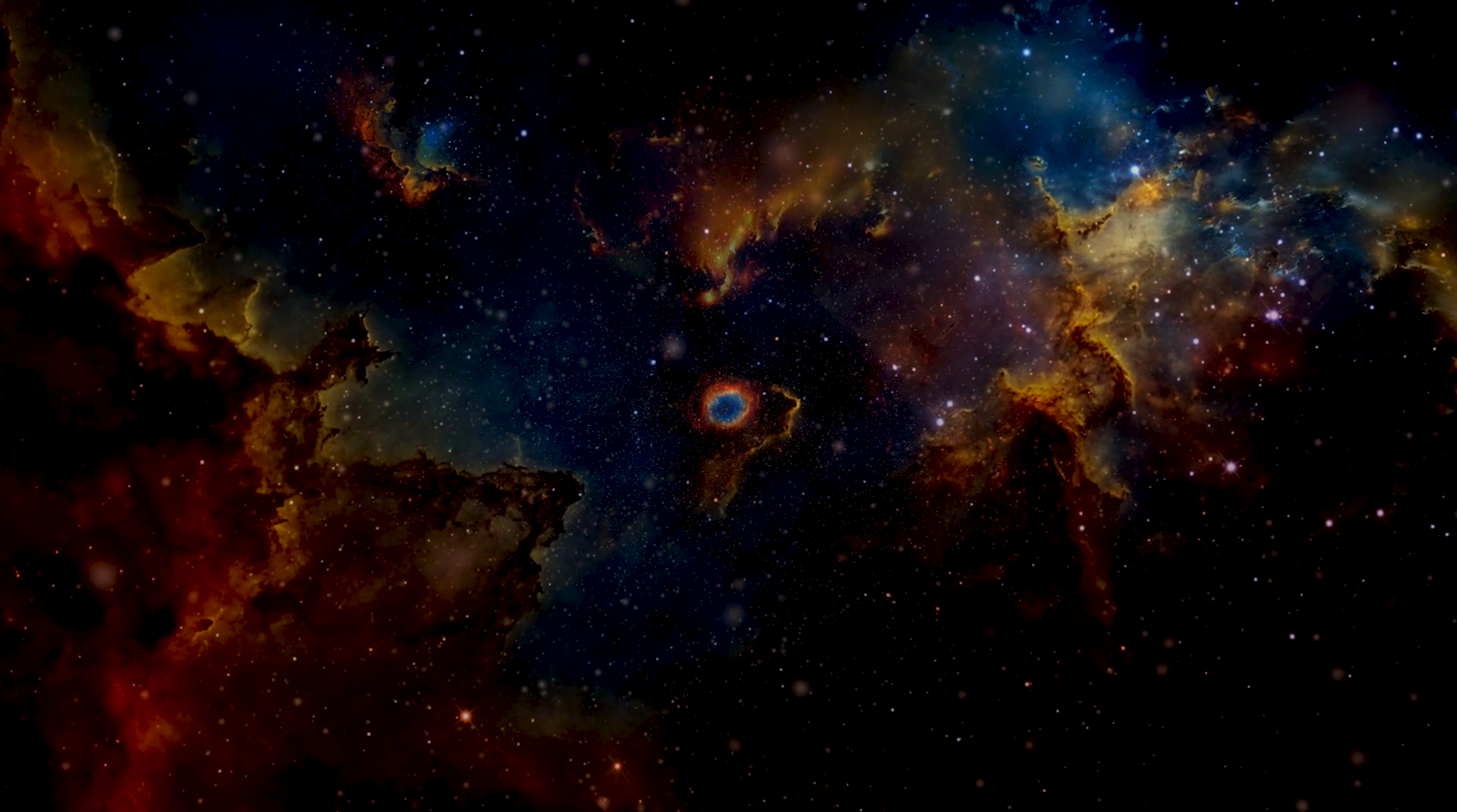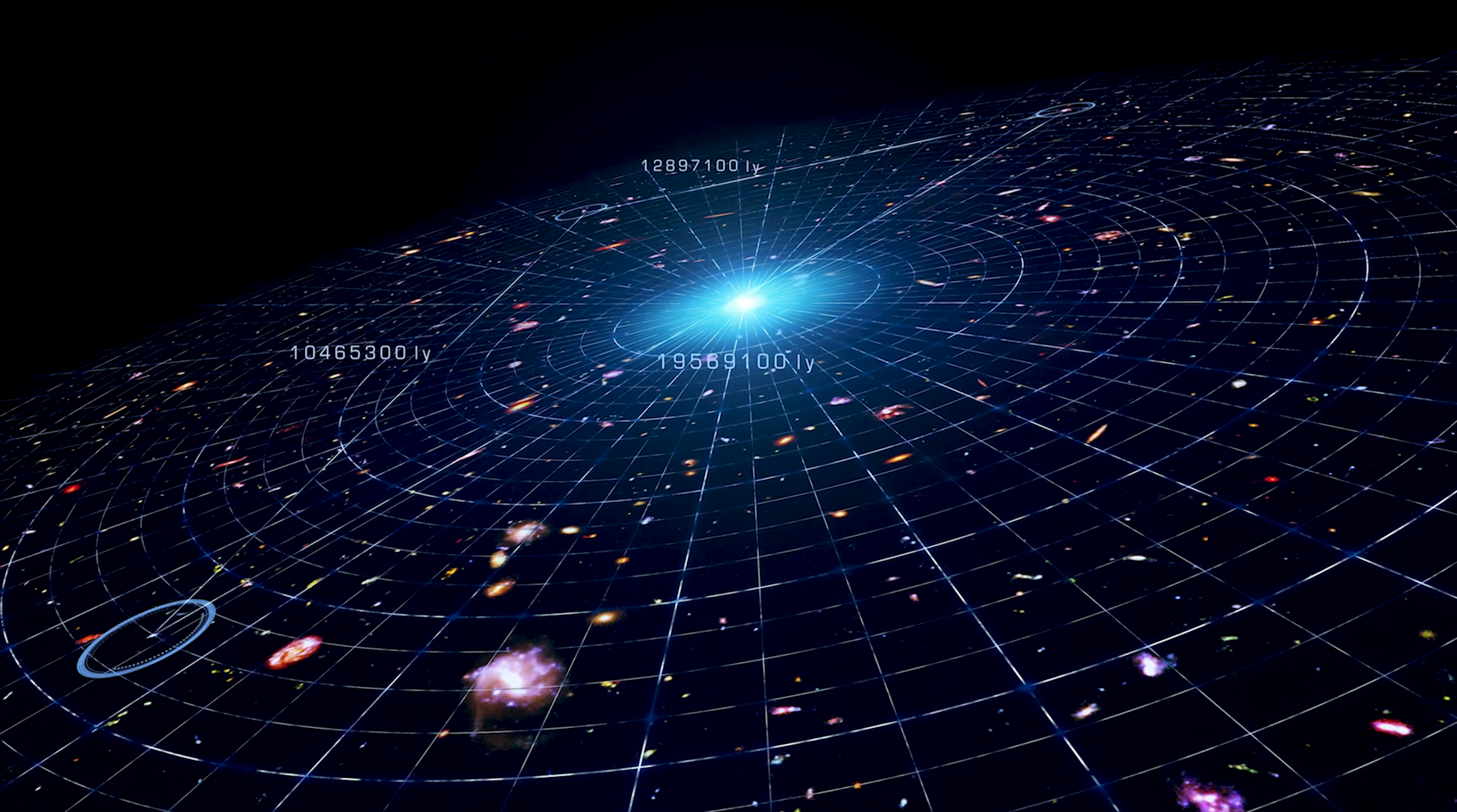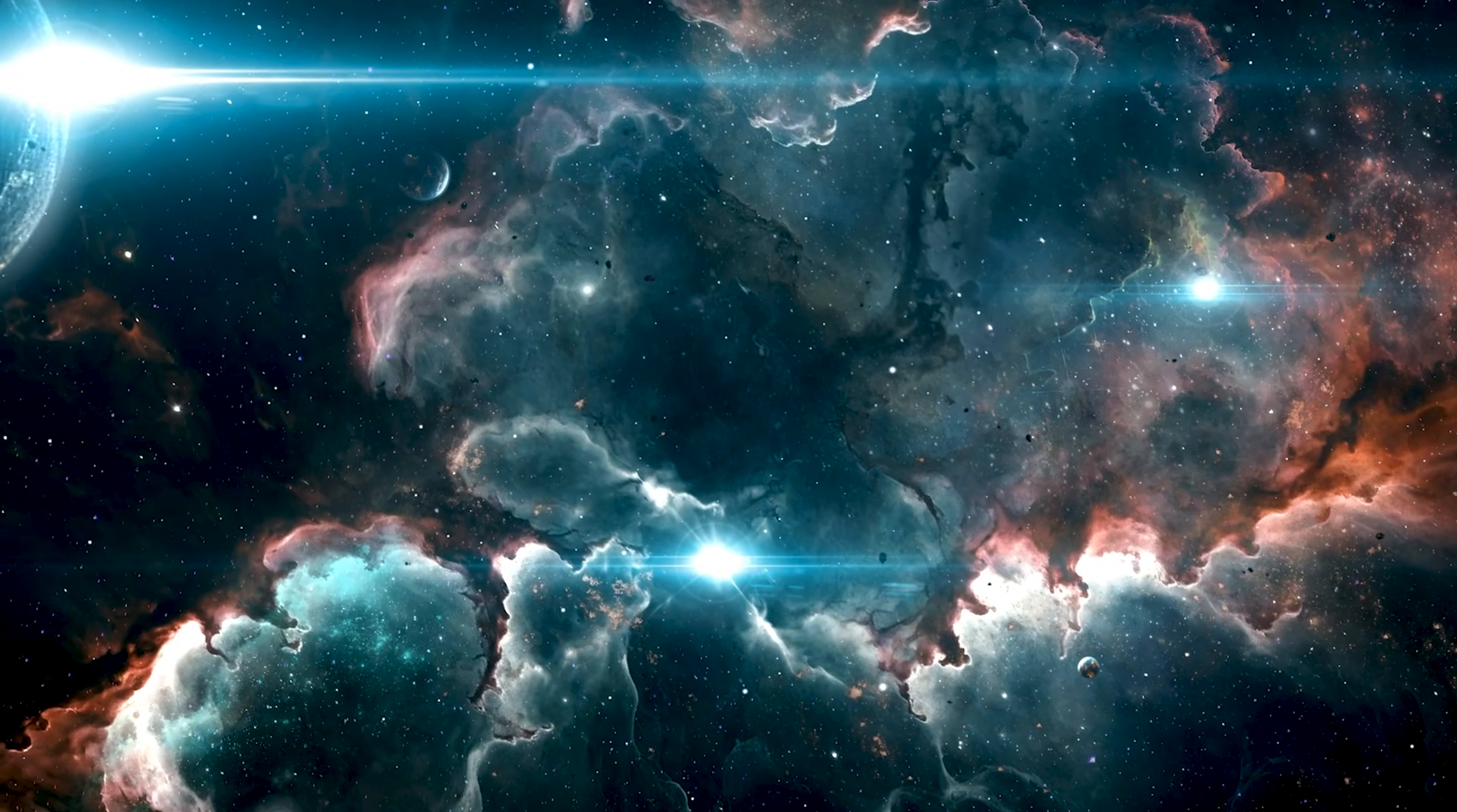To understand why this is such a problem, we need to talk about the model itself. Lambda CDM says the universe is dominated by two invisible ingredients: cold dark matter and dark energy. Together, they control how galaxies form and how the universe expands. According to this model, early galaxies grow slowly. They pull in matter over time, forming stars gradually. There simply isn't enough time or material for massive galaxies to appear just a few hundred million years after the Big Bang.